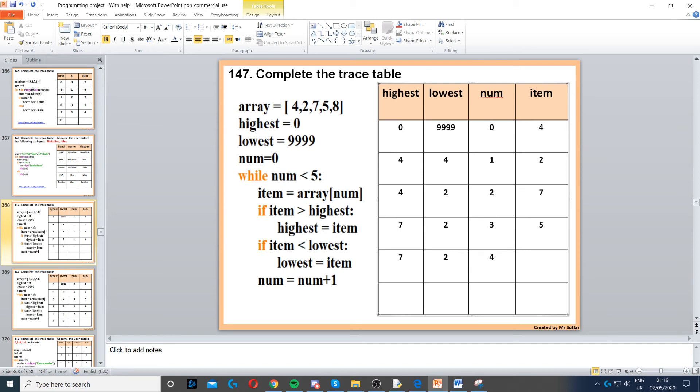Next num is 4. Next index, index 4, is 8. If 8 is greater than highest, yes, 8 is greater than 7, so we set highest to 8. It's not less than 2, so we keep it as 2.